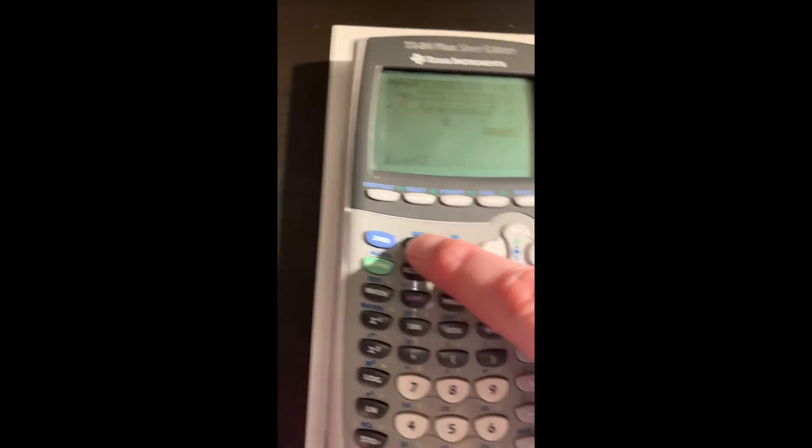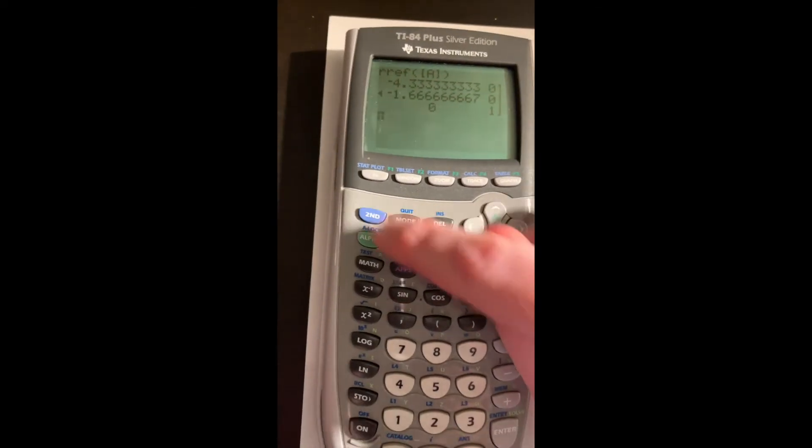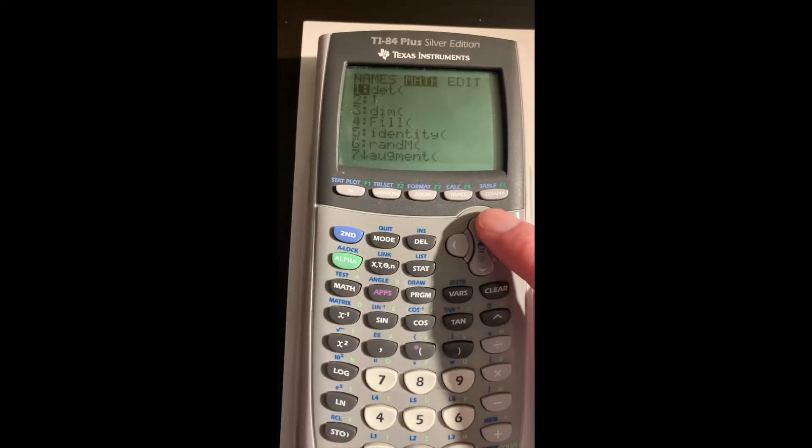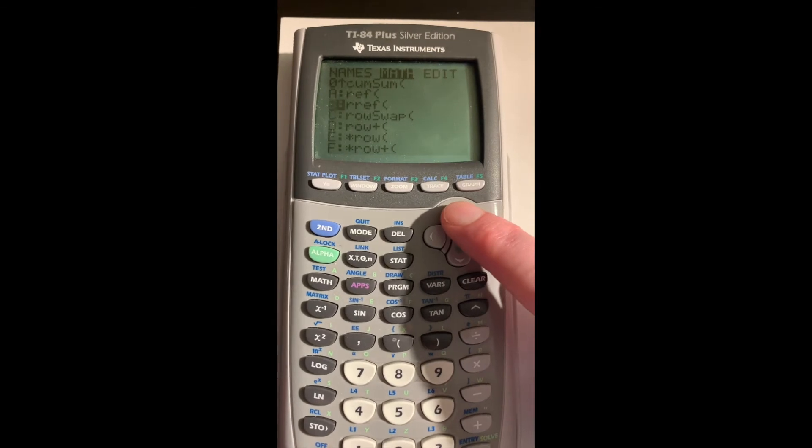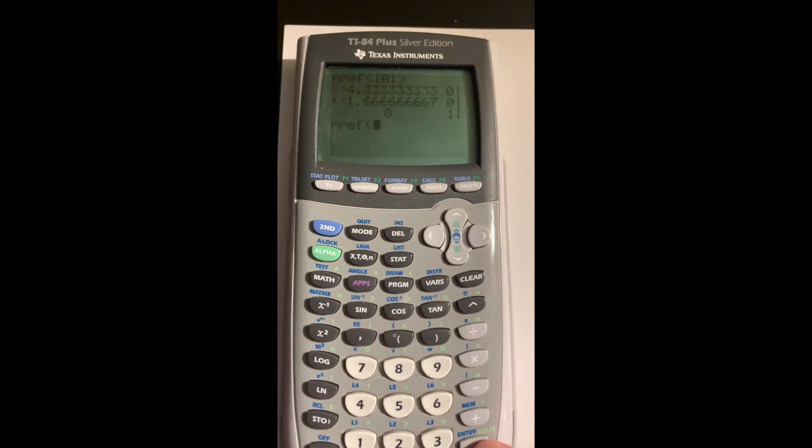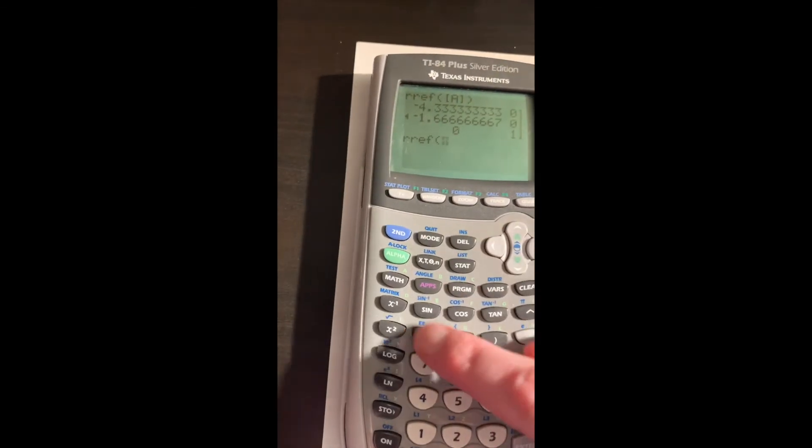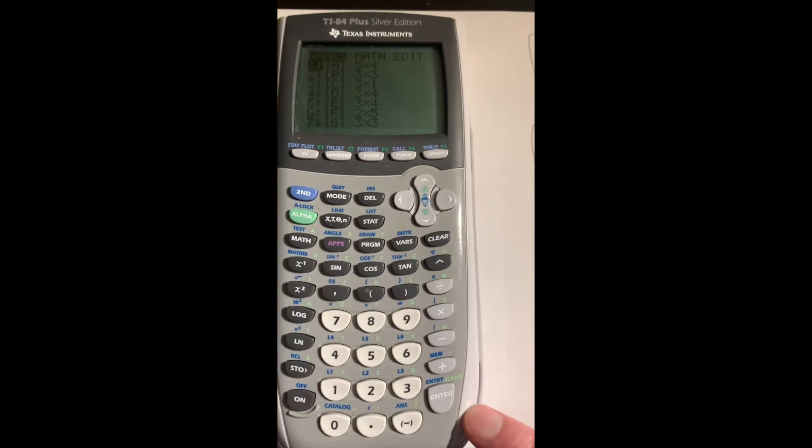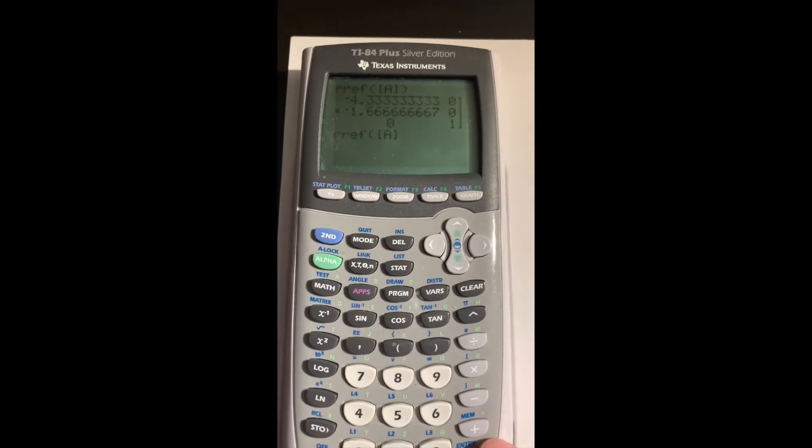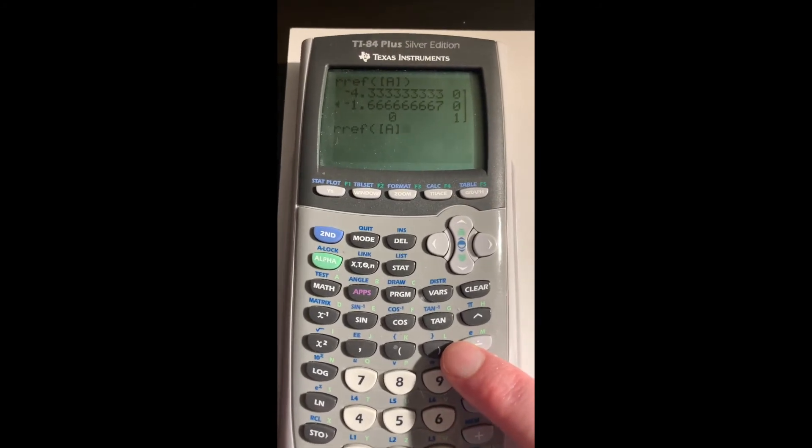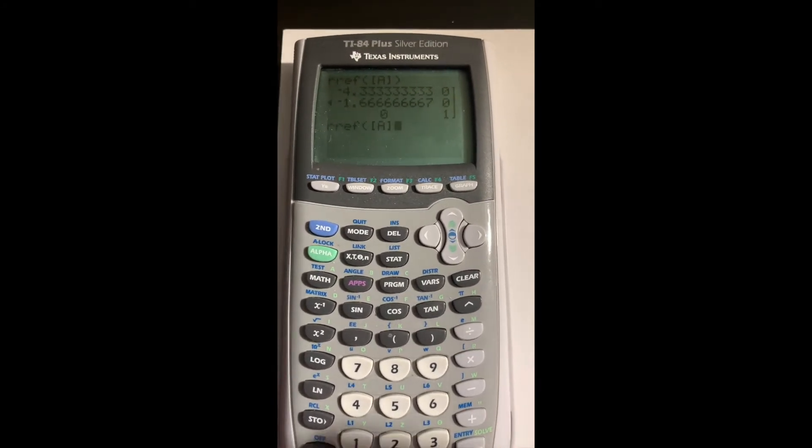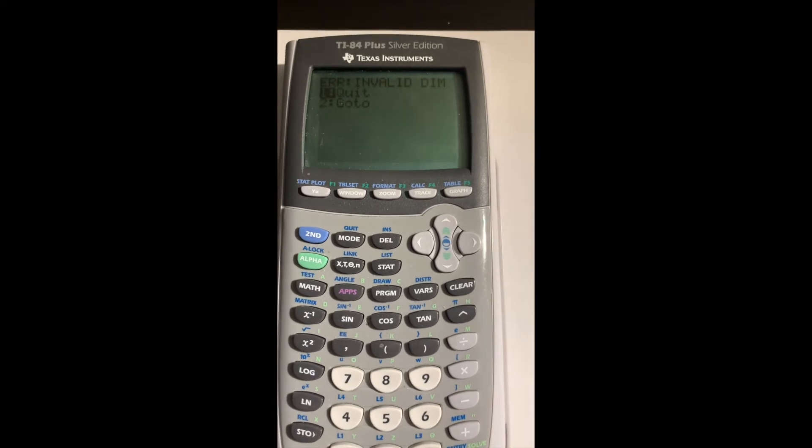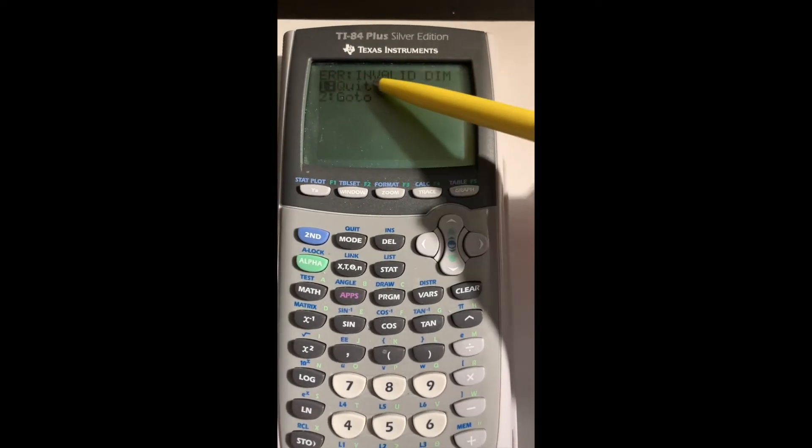Now when we quit and go back to the matrix menu over to the math menu and up to RREF, then say second matrix and choose matrix A, which is already highlighted, and press enter. I won't close the bracket there this time just to show it'll still work. But when it evaluates, it says there's an invalid dimension.